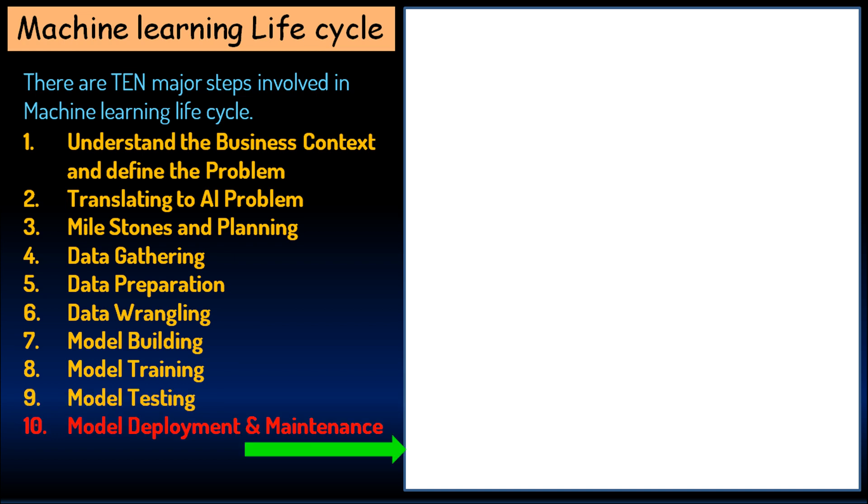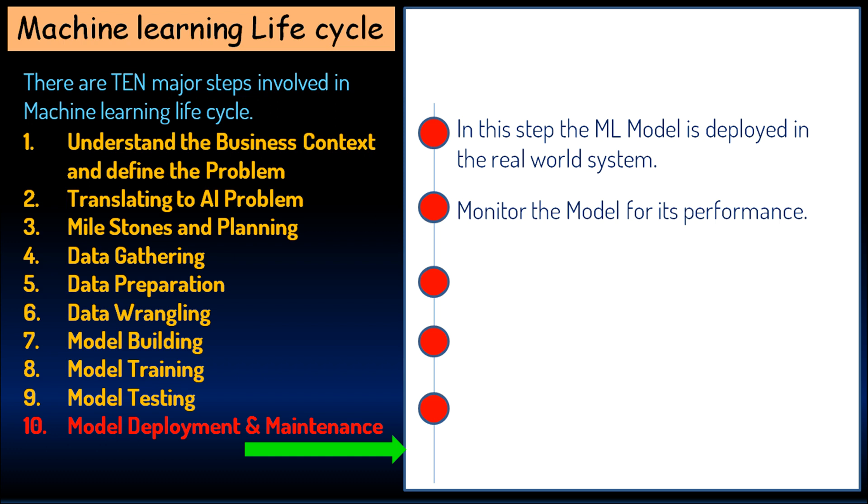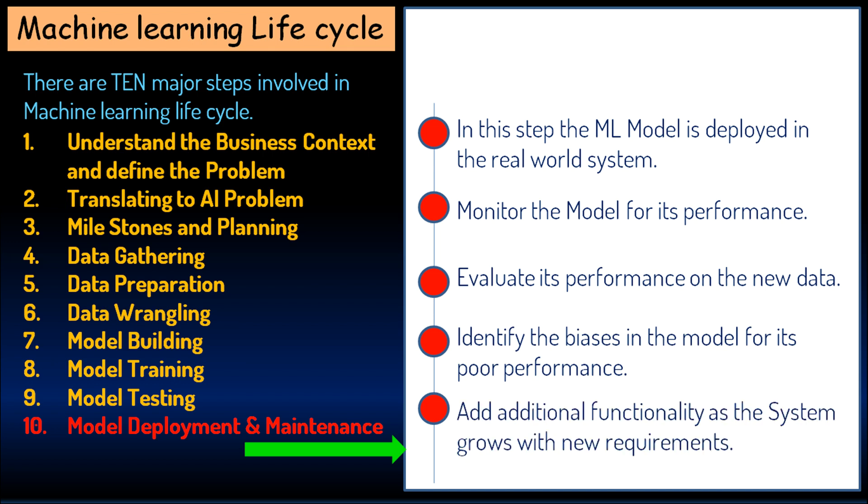The final step in the ML life cycle is model deployment and maintenance. In this step, the ML model is deployed in the real world system. Monitor the model for its performance, evaluate its performance on the new data, identify the biases in the model for its poor performance, and add additional functionality as the system grows with new requirements.